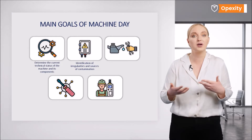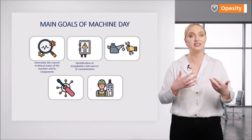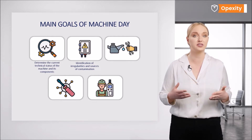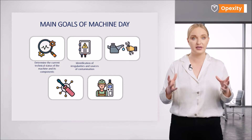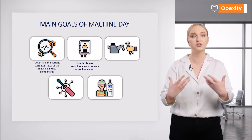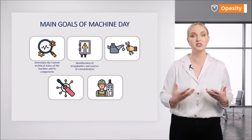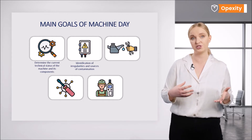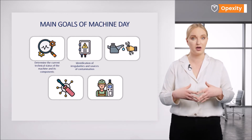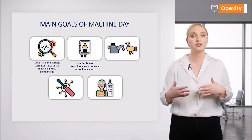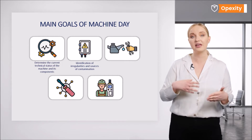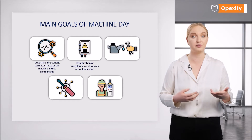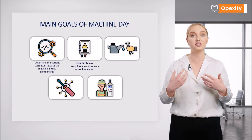An important element of cleaning is to identify the places where contamination occurs. We are talking here about contamination resulting from poor machine conditions — for example, leaks — as well as process contamination. With a list of such spots, we'll be able to remove the technical ones, and in the case of process ones, reduce them by, for example, using additional guards.